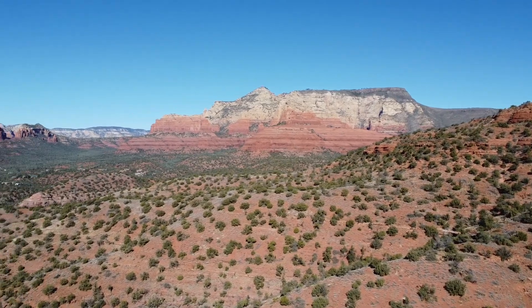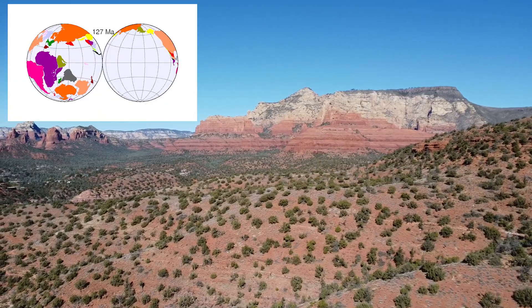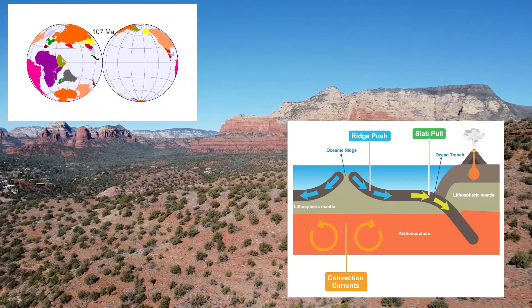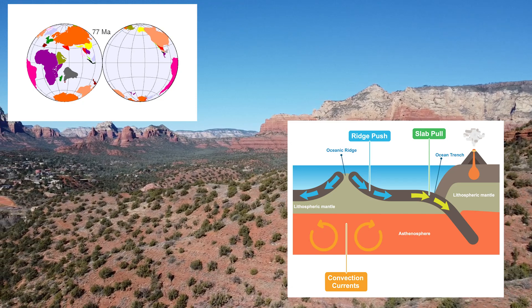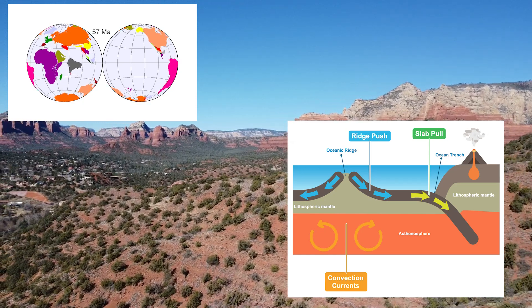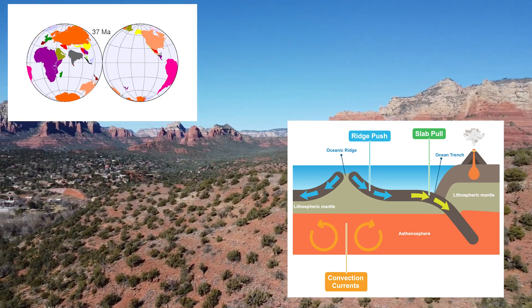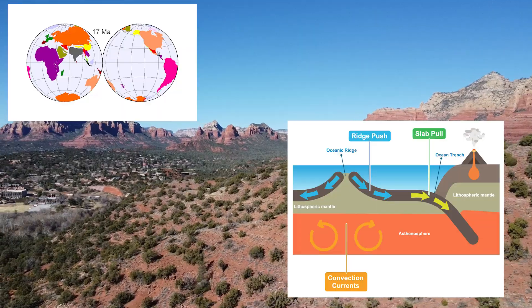Plates move by essentially getting dragged by large convection currents in the soft plastic-like mantle, which is a part of inner earth that sits right beneath the crust and is quite a bit hotter and a lot more pressurized. The way plates move in relation to each other determines their boundaries.